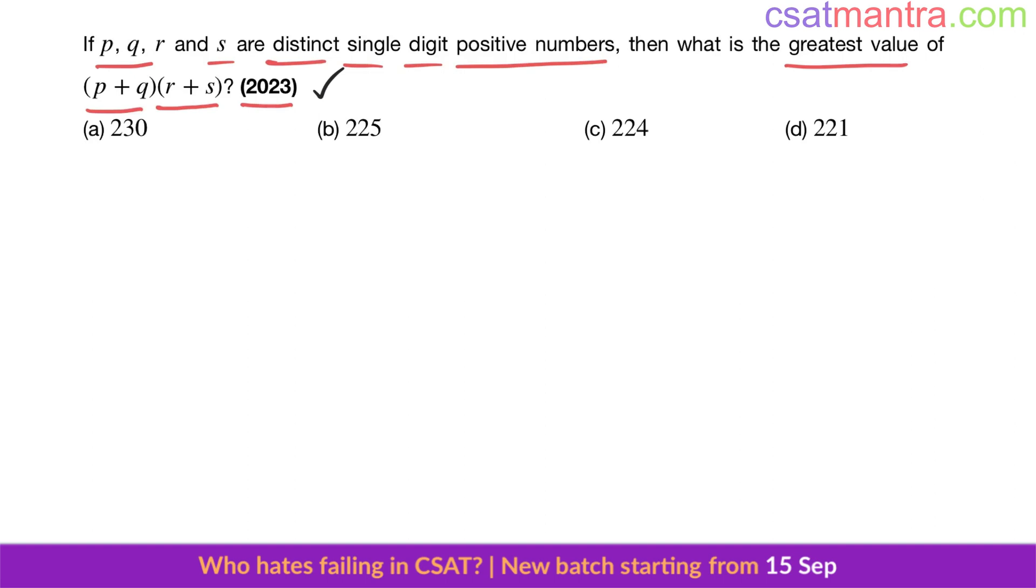Try to remember this. Say you have a plus b equals four, where a and b are positive integers. That means a and b cannot be zero; zero is neutral. Now, what are the possibilities of a and b? One and three. One plus three is four. Order is not important here, one plus three or three plus one. I'm not worried about the order. So one and three, two and two.